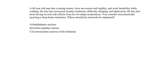The options are subthalamic nucleus, globus pallidus interna, or the centromedian nucleus of the thalamus. The subthalamic nucleus is certainly a viable option — it's been shown to be very successful at eliminating the 2–3 Hz tremor seen in Parkinson's patients, and you can achieve successful DBS at low stimulation levels while also being able to lower medication.